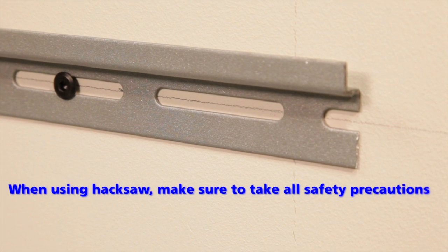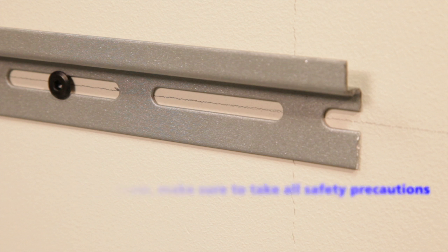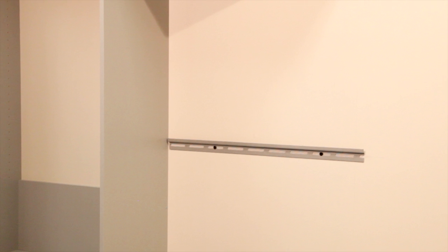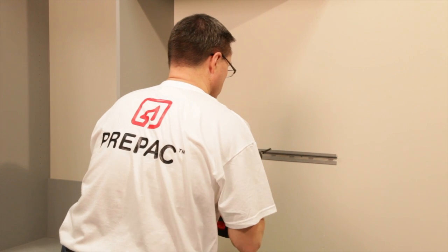Since the hanging rail is longer than the space needed for the lower cabinet, we have used a hacksaw to cut the rail one quarter of an inch smaller than the cabinet width. In this case, 29.75 inches for a 30 inch wide cabinet.